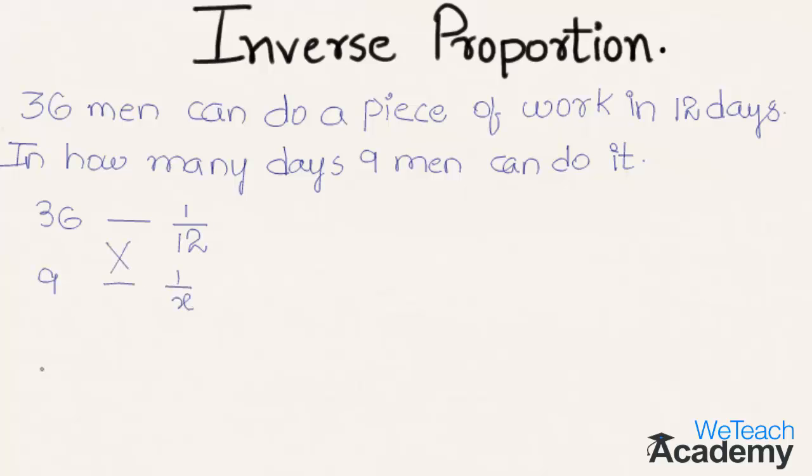Now let us cross multiply it. So we get here 36 into 1 by x, which is equal to 9 into 1 by 12. As 36 is multiplying here, it divides. So we get 1 by x is equal to 9 into 1 by 12 into 1 by 36.